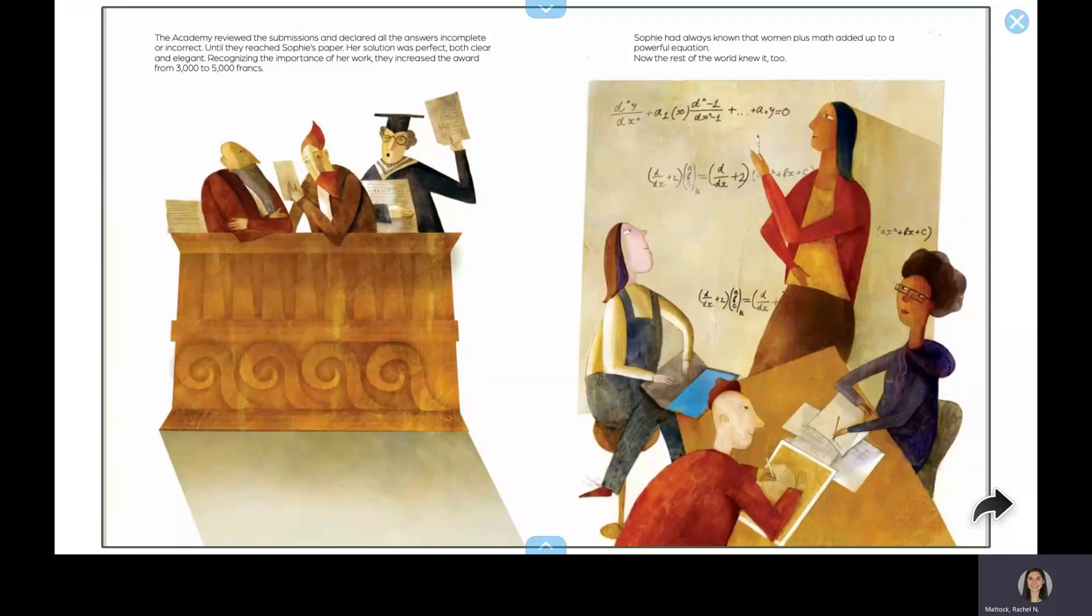The Academy reviewed the submissions and declared all the answers incomplete or incorrect until they reached Sophie's paper. Her solution was perfect, both clear and elegant. Recognizing the importance of her work, they increased their award from 3,000 to 5,000 francs. Sophie had always known that women plus math added up to a powerful equation. Now, the rest of the world knew it, too.